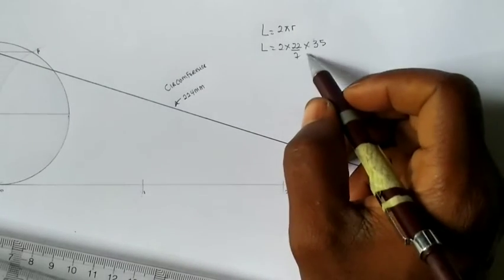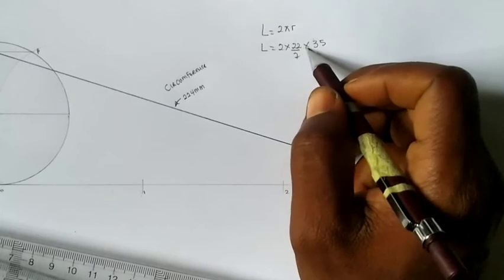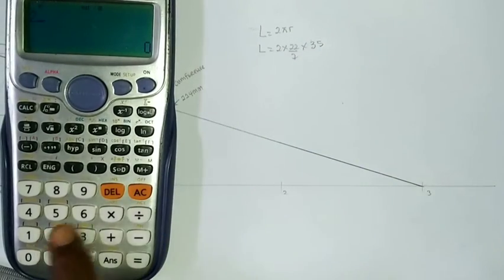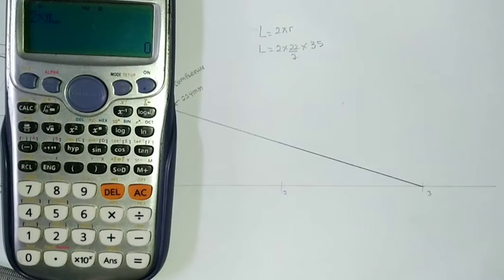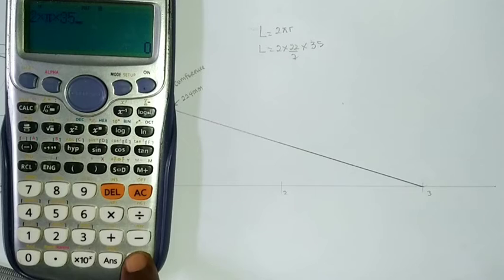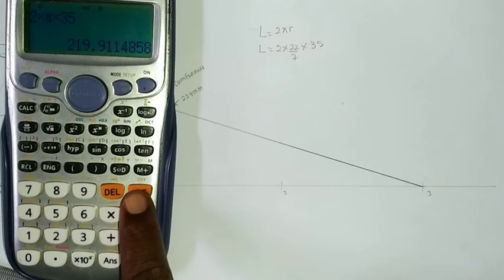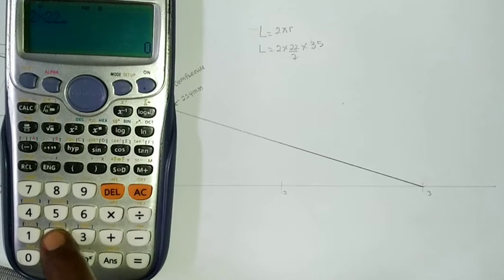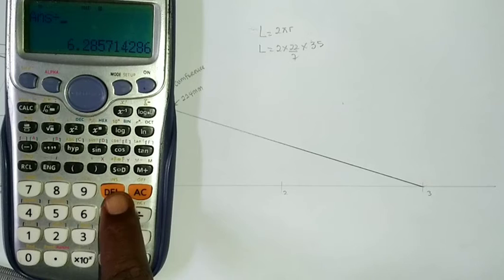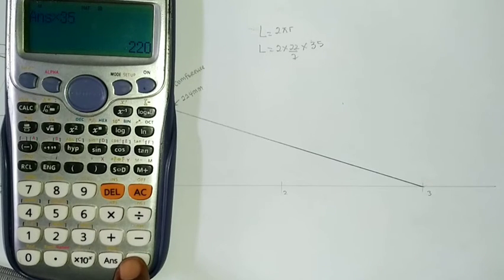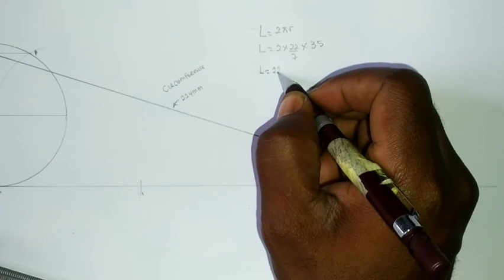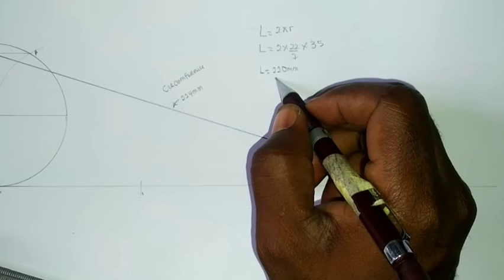So if we press the calculator, 2 times 22 divided by 7, multiply by 35. We can say 2 times the pi times 35, where pi is 22 by 7, to give us 220 approximately. So we are having our length to be equal to 220 millimeters. This is our answer, the length of the circumference.